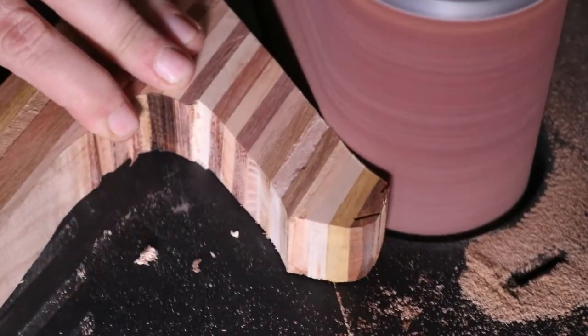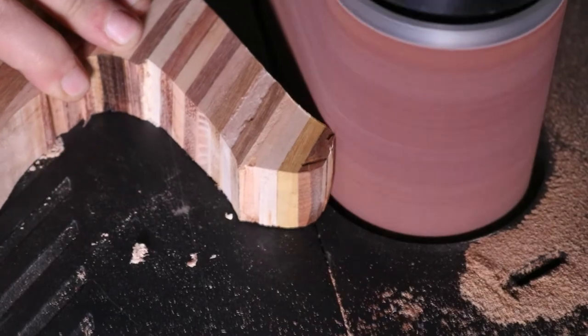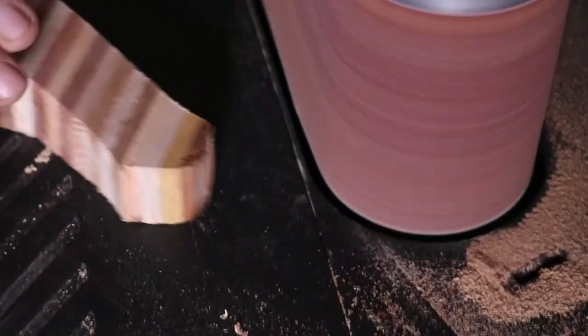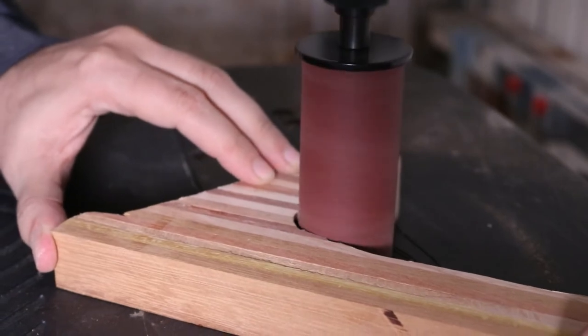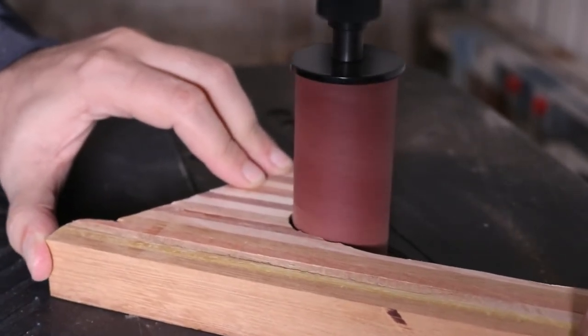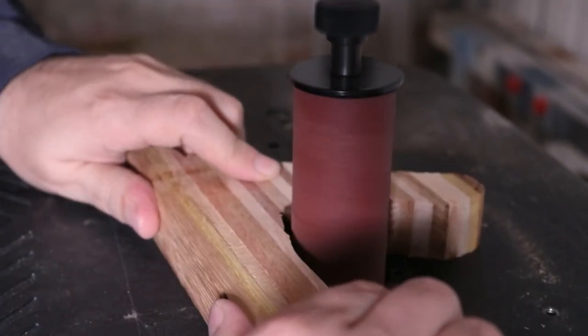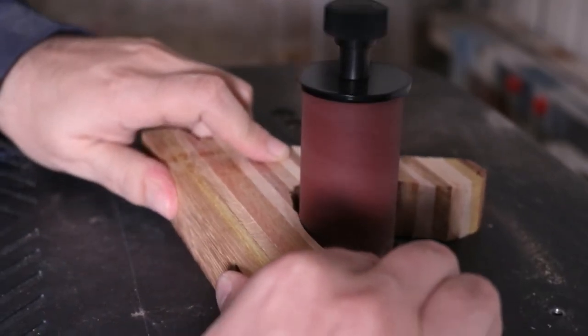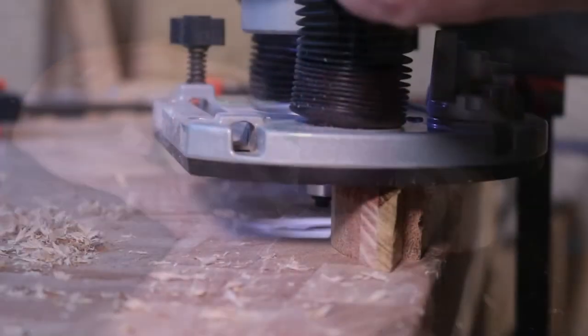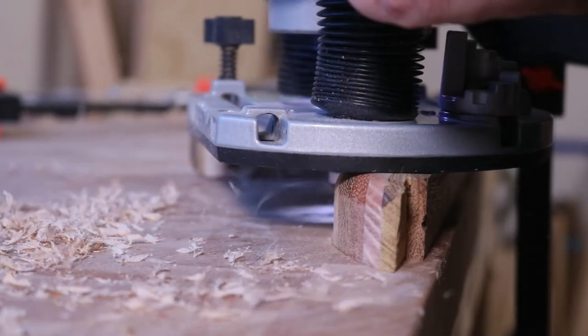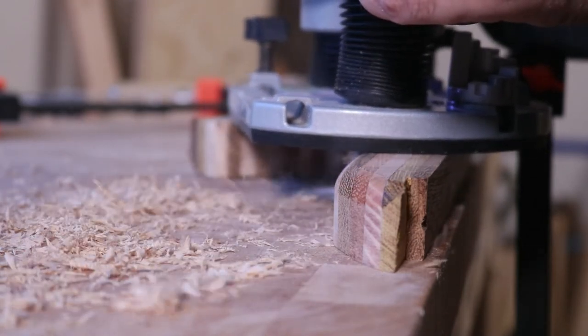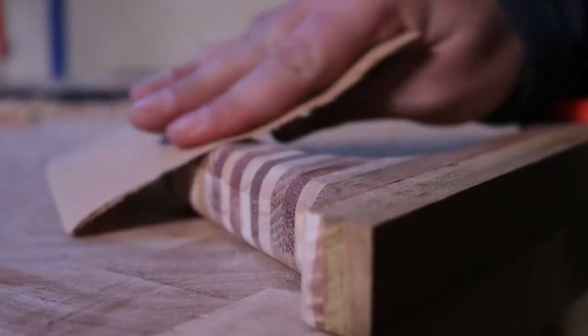I then took the piece to the oscillating sander and used various spindle sizes for refinement. I used a router, a round-over bit, and another round of light sanding for the finishing touches.